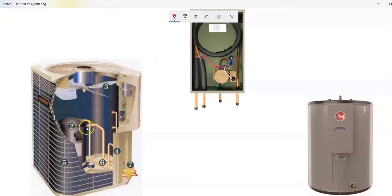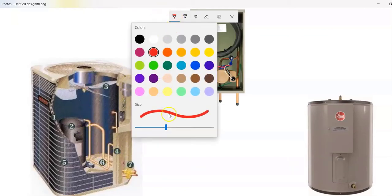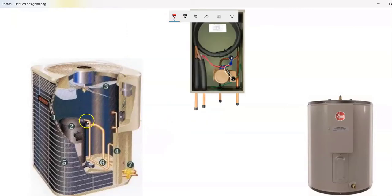So what we essentially do is you drill two holes through the cabinet here. We're going to take this refrigerant and we're going to take it out like this and send it into this heat exchanger.